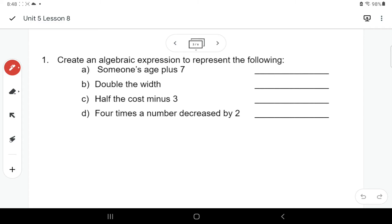Okay. So here, if we want to talk about somebody's age plus 7, I might just call that x plus 7. Whatever the first person's age is 7 years older. Double the width. Remember the word double means multiply by 2. So I would say 2w. Half the cost minus 3. So you could say 1 half c or c divided by 2 take away 3.